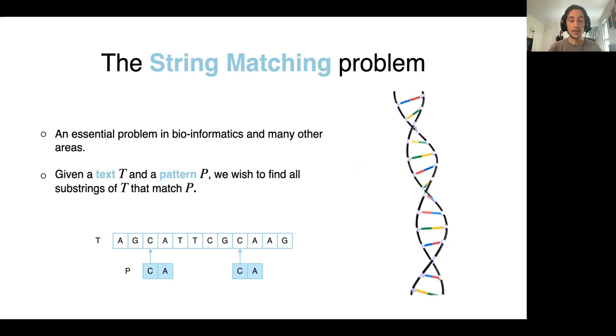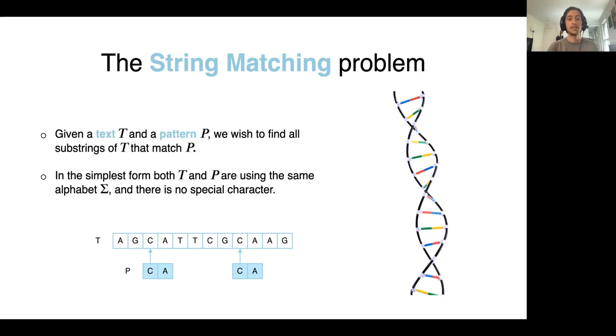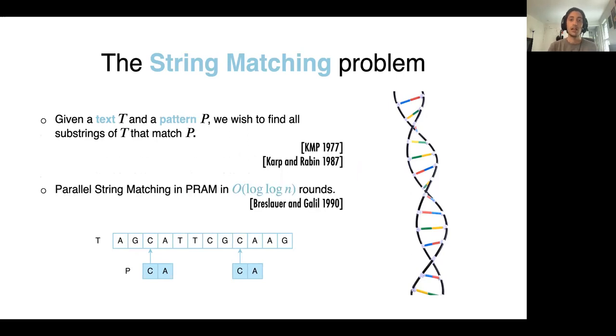For example, if the string P equals CA, it occurs twice in T at two different positions. In the simplest form, both text and pattern use the same alphabet Σ and there are no special characters. In this case, the problem can be solved in O(n) running time in the sequential setting using the KMP algorithm or the hashing techniques of Karp-Rabin that are from 1977 and 1987.